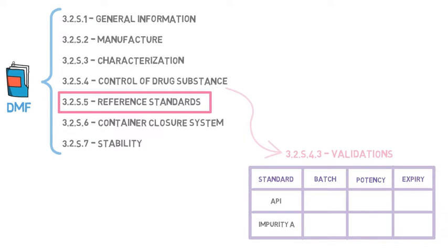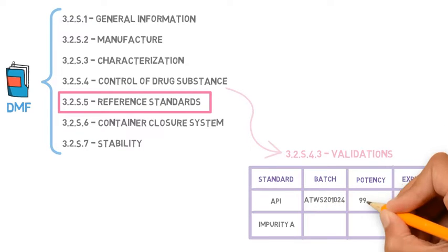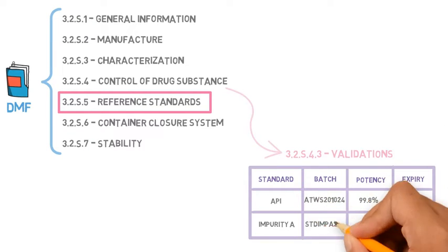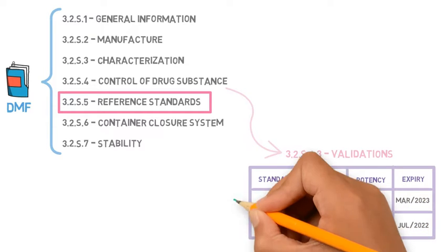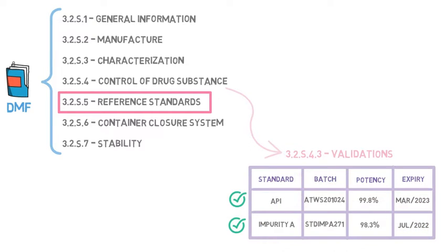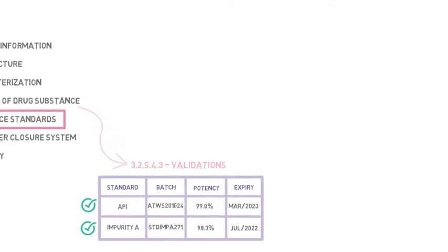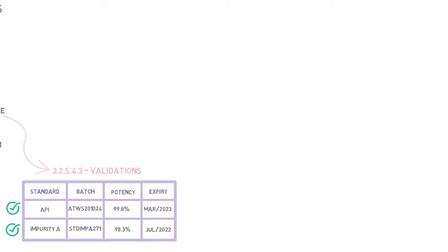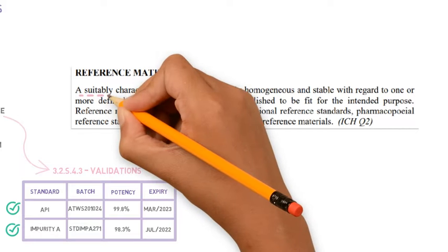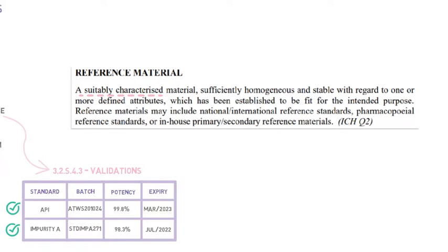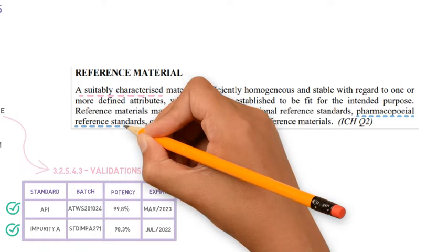Any batch of standard for the API or impurities used in such validations must be well characterized because we need to be sure of their structure. The ICH Q2 definition states that the reference material used in the validations must be a suitably characterized material, which may include national and international reference standards, pharmacopoeial reference standards, or in-house materials.